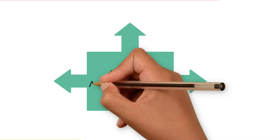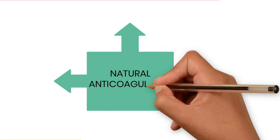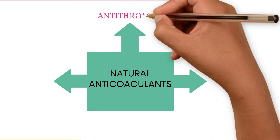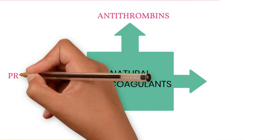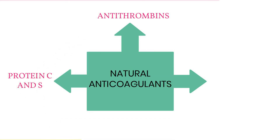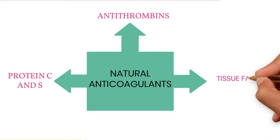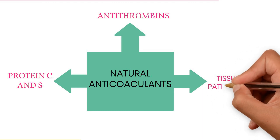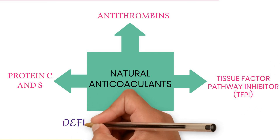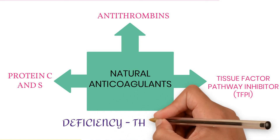To balance clotting, there are three categories of natural anticoagulants: antithrombin; protein C and protein S; and tissue factor pathway inhibitor. Deficiency of any of these natural anticoagulants results in thrombosis.